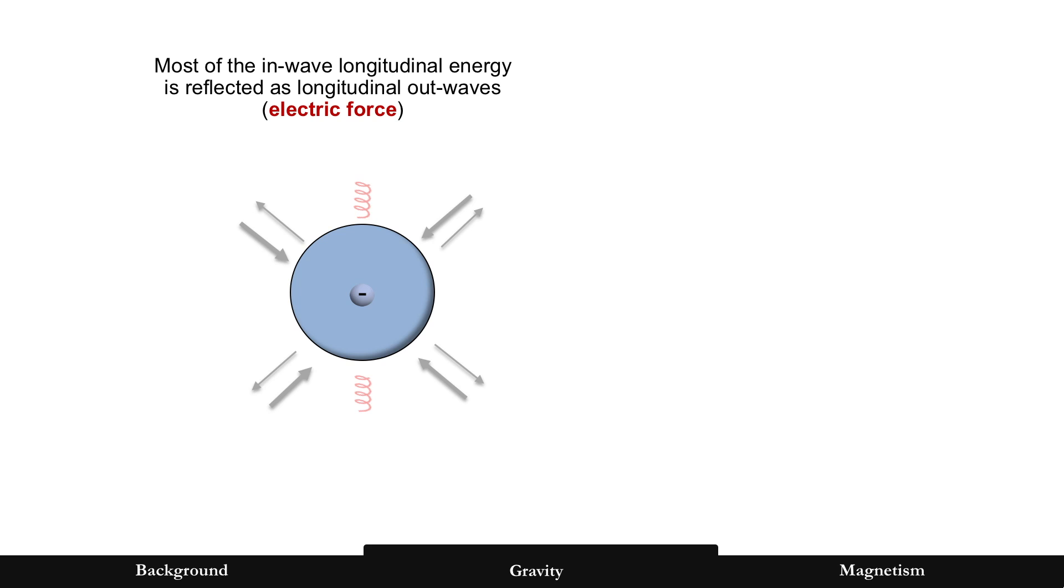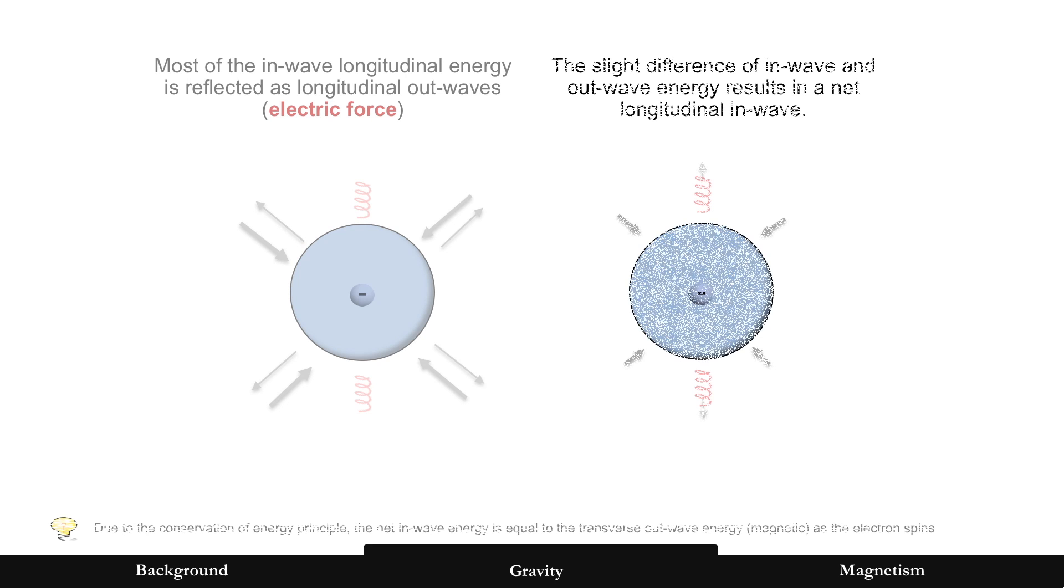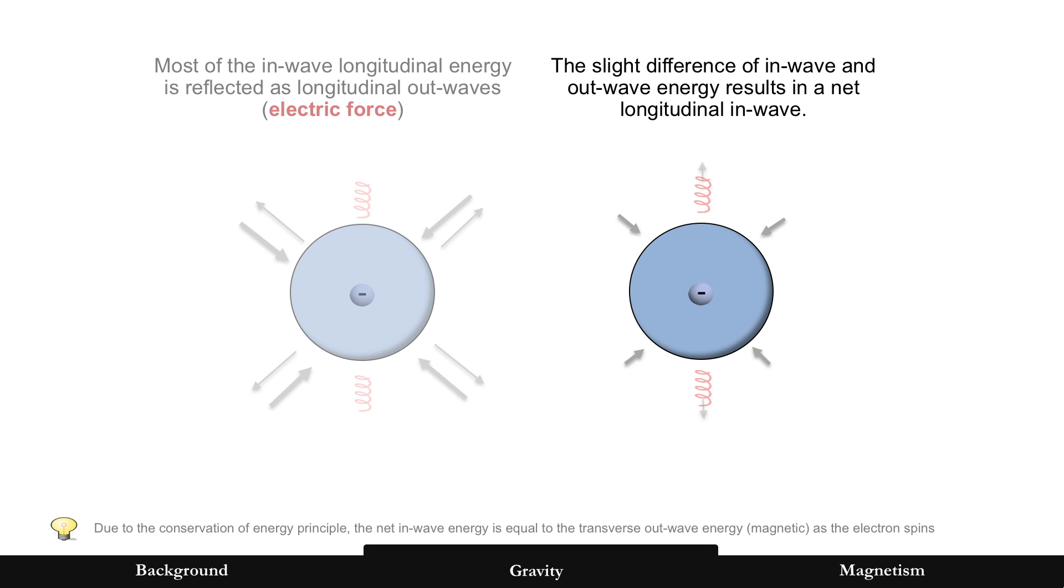Okay, that's a quick recap. So let's do this. In-waves are reflected as longitudinal out-waves. And if you want a better visual of this, think about sound waves, for example. Those are longitudinal waves bouncing off a balloon. Most of that energy is reflected. But what if it causes a slight turn of that balloon, then you would have a second waveform. But that slight difference of in-wave and out-wave energy results in this: a net longitudinal in-wave. And due to the conservation of energy, that energy equals that magnetic spin coming out.